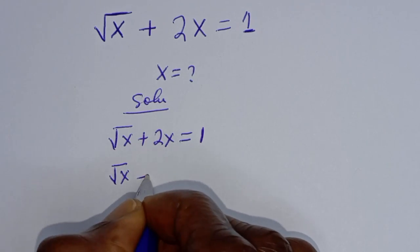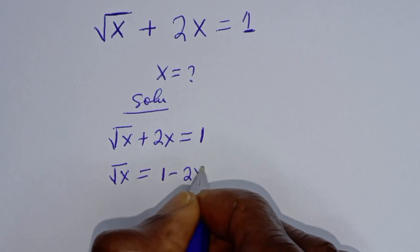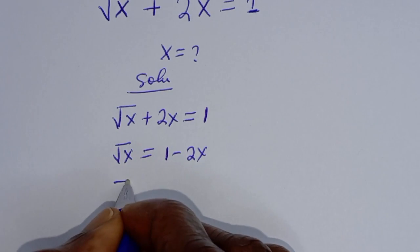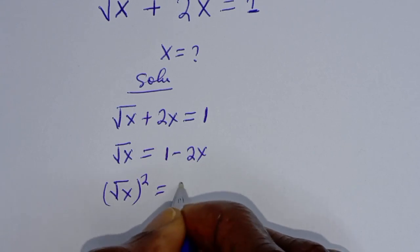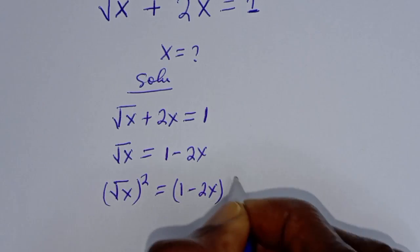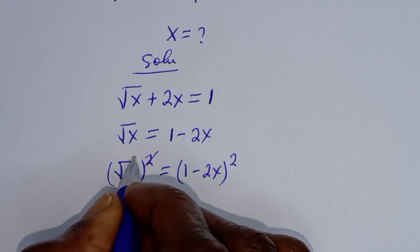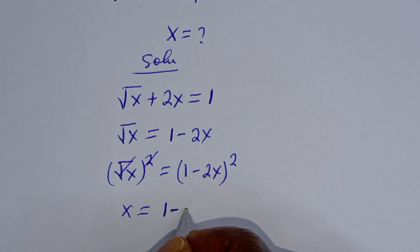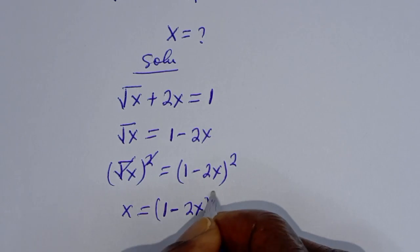Square root of s is equal to 1 minus 2s. Then let's square both sides of this equation: square root of s squared is equal to (1 minus 2s) squared. This will cancel the square root, giving s is equal to (1 minus 2s) squared.